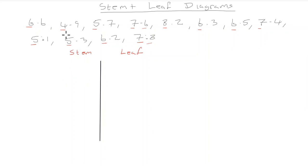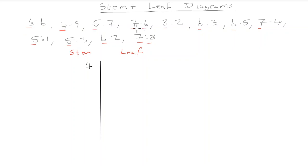Looking at the whole-number parts of our data: 6, 4, 5, 7, 8, 6, 6, 7, 5, 5, 6, and 7. The smallest value is four and the highest value is eight. So we put four at the top of the stem and eight at the bottom, filling in five, six, and seven in between.